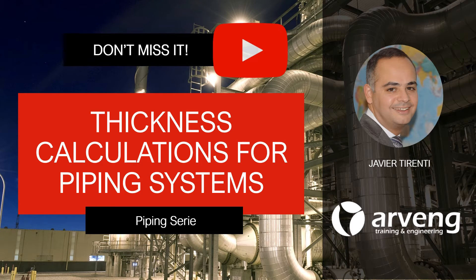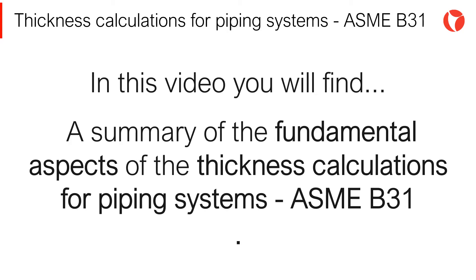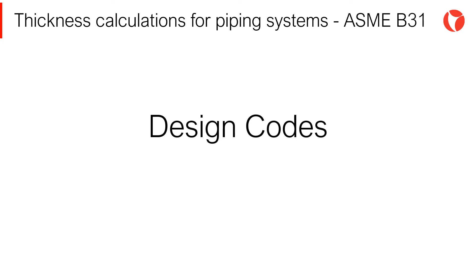Hi there. You are watching a video of piping systems in industrial plants. There are different design codes allowing us to calculate the required thickness of a pipe subjected to internal pressure. All these codes are based on the same principles, so they yield similar results. However, each code uses its own safety coefficients and calculating factors depending on the type of plant being designed. The most used design codes for piping systems in industrial plants are those of the ASME B31 code.